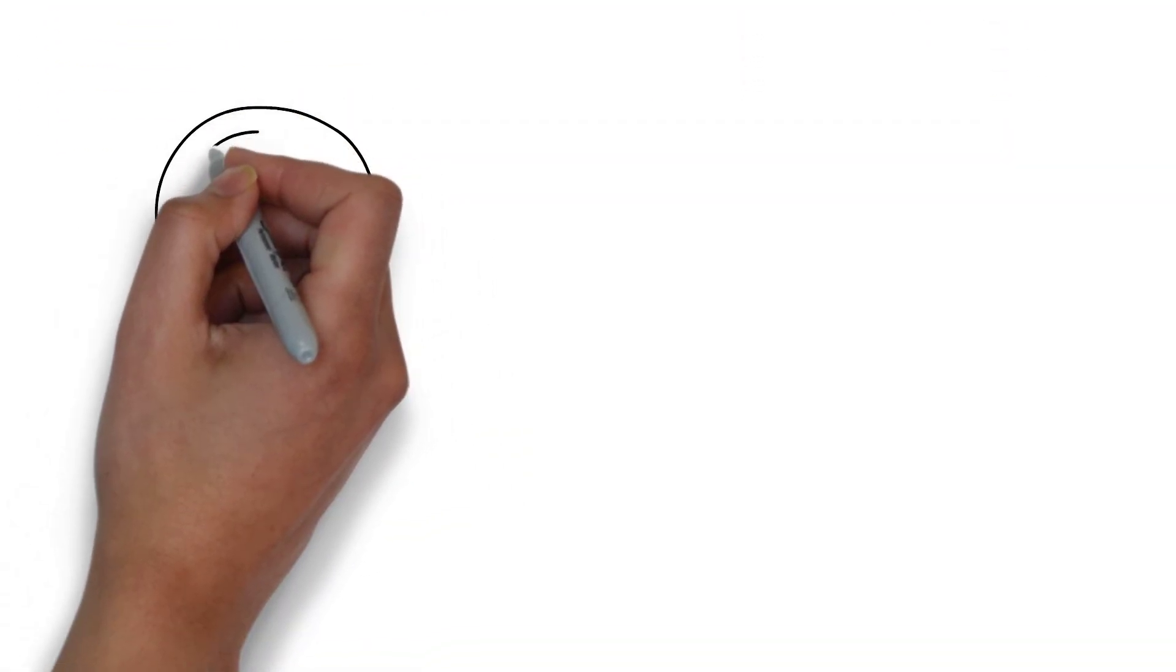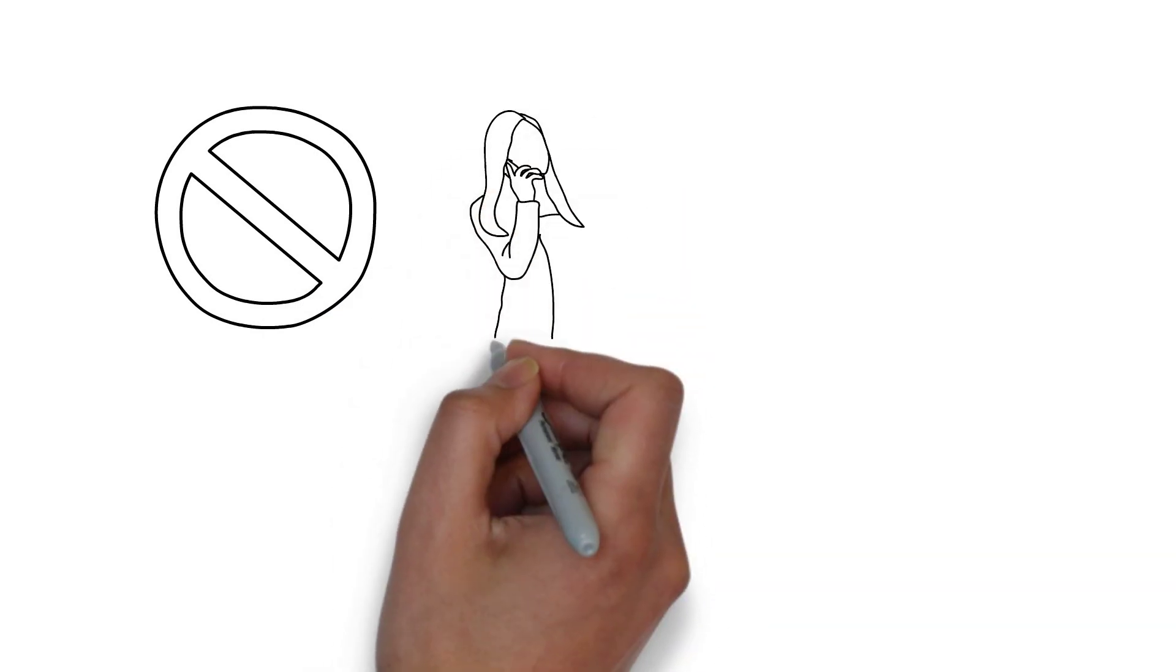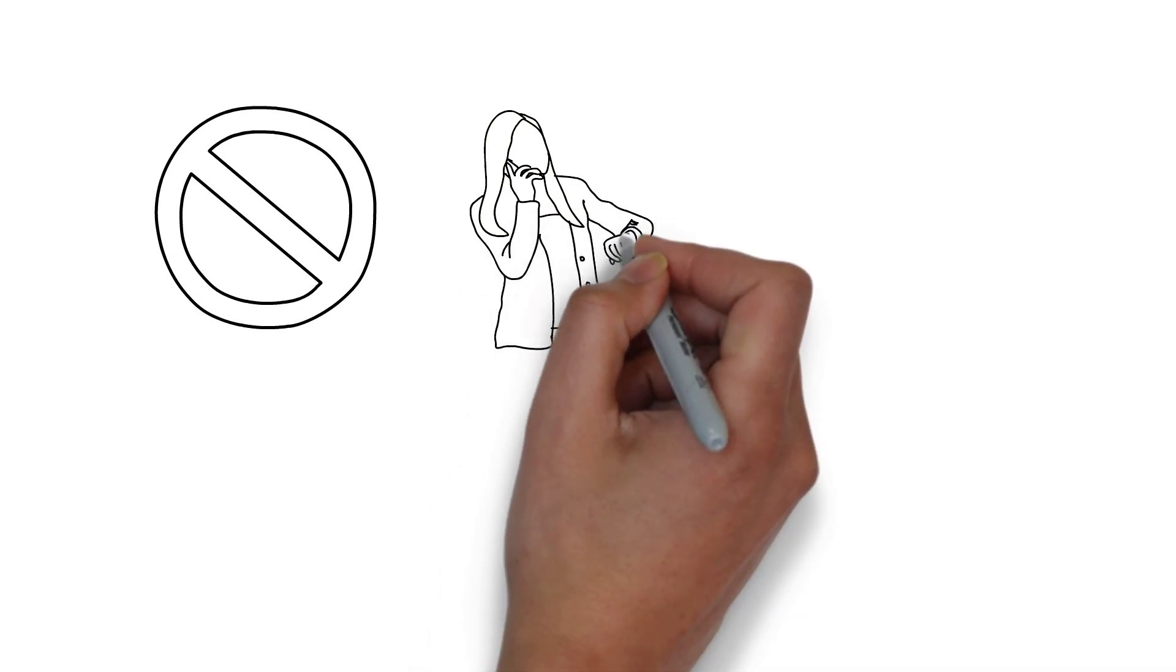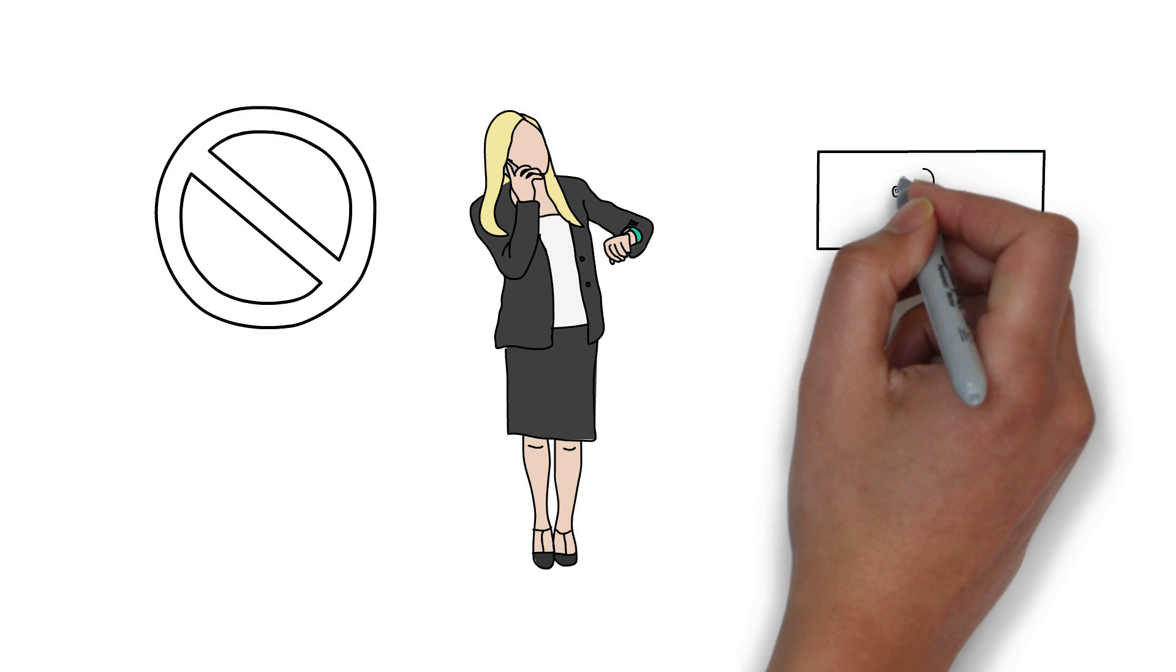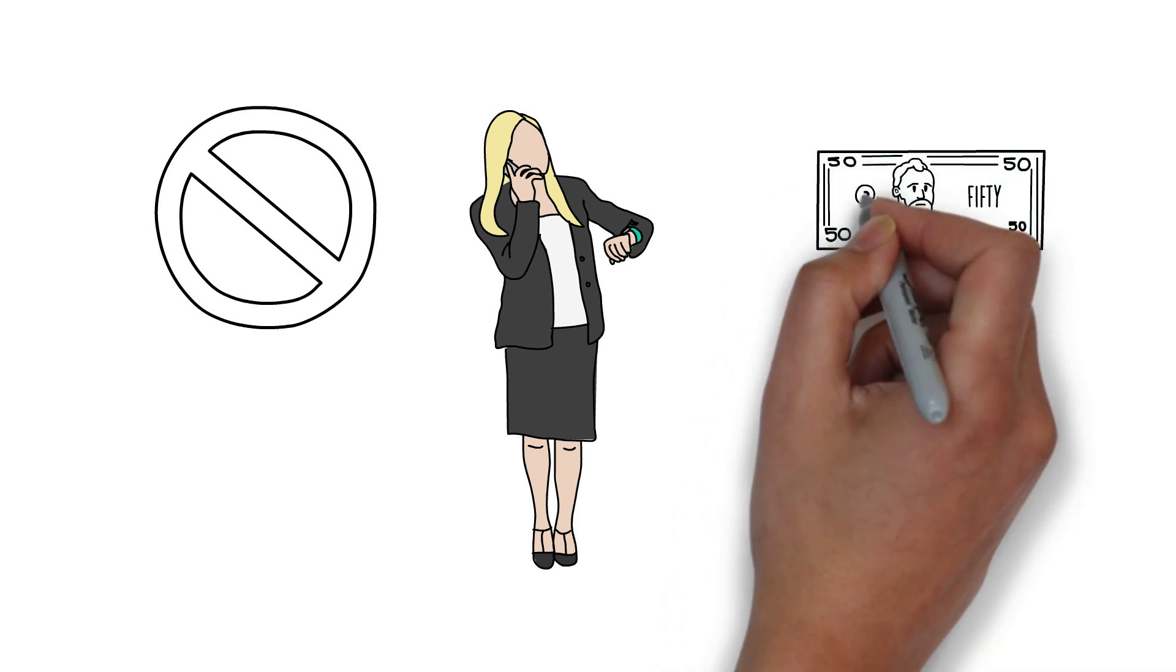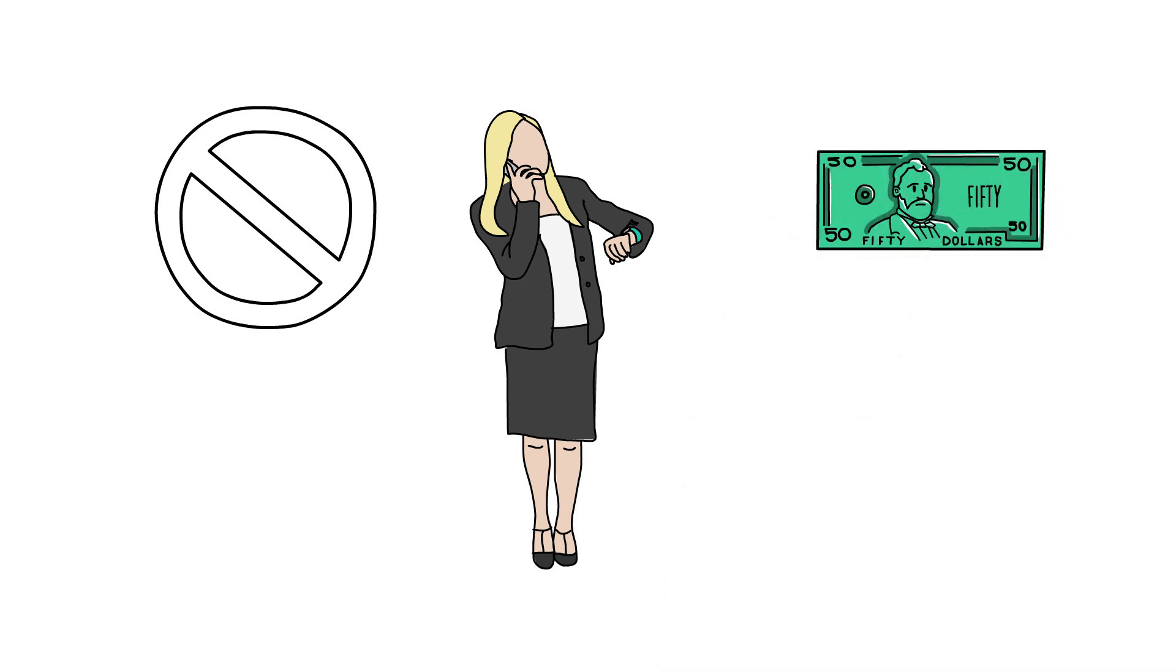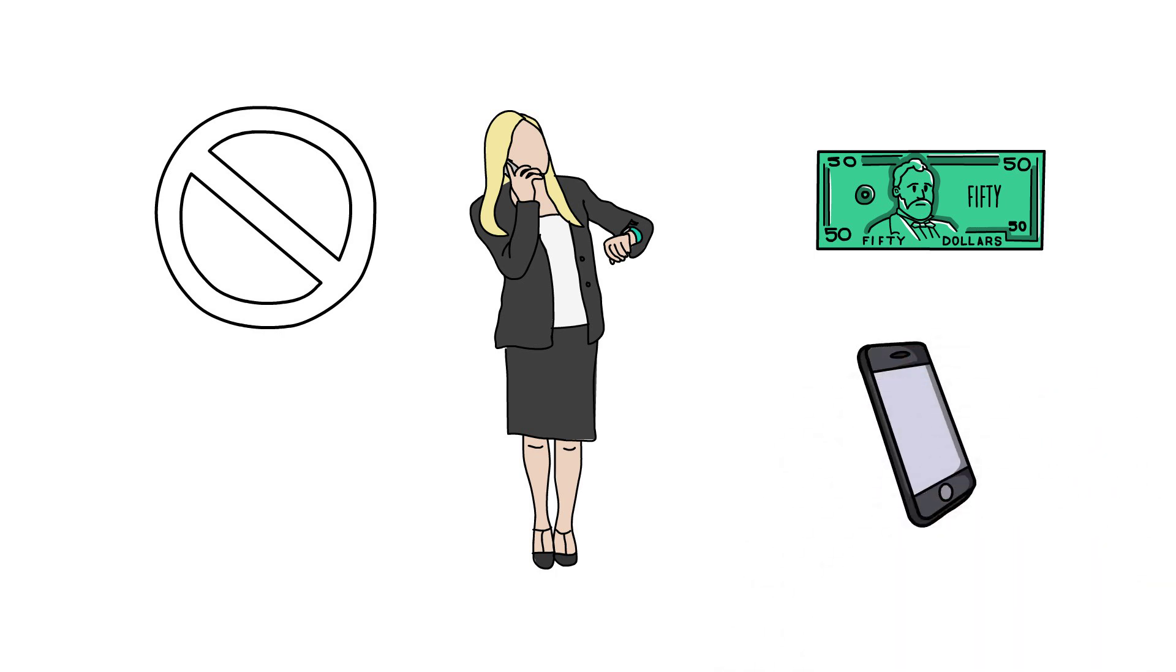This might seem obvious, but only buy items when completely necessary. If you had an extra long day at work, putting in more hours, you might feel entitled to buy a new phone or watch. While you might have earned a small amount of money extra by staying at work longer, the amount earned usually isn't as much as anticipated. In other words, if you worked a long day and earned an extra $50, it's not logical to spend hundreds on a new phone or a night out in the town.